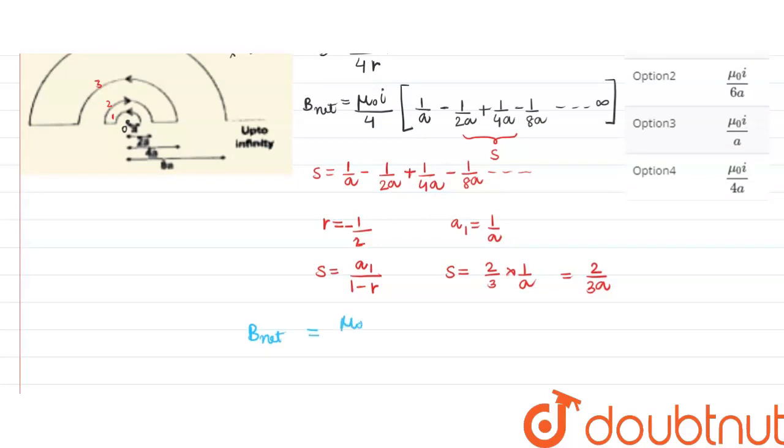This 2 gets cancelled with the 4 to give 2, so the final answer comes out as μ₀i/(6a). This is our final answer, so let's check the options.